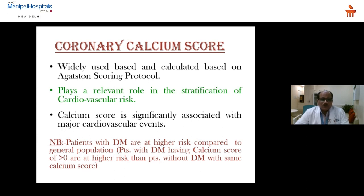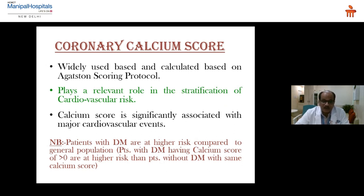Calcium score is widely used and calculated based on the Agatston scoring protocol. It plays a relevant role in stratification of cardiovascular risk and is significantly associated with major cardiovascular risk events. Notably, in the presence of diabetes mellitus, risks compared to the general population are higher — for the same calcium score of 100, if normal population risk is 10%, in diabetics it will be 15 to 20% higher.